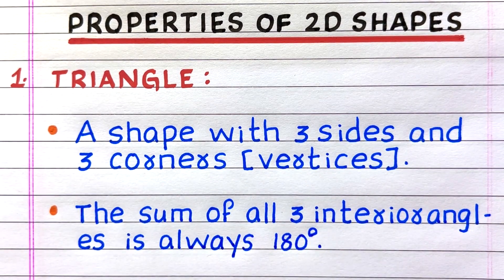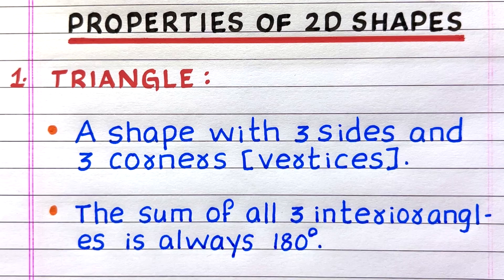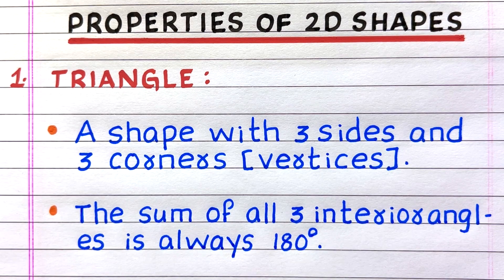The name of the first 2D shape is triangle. Properties: first, a shape with three sides and three corners. Second, the sum of all three interior angles is always 180 degrees.